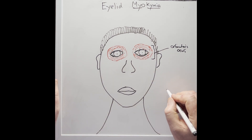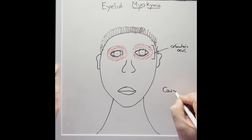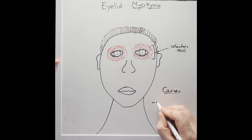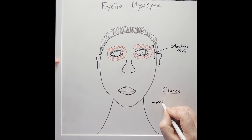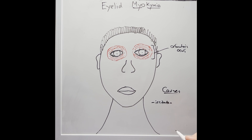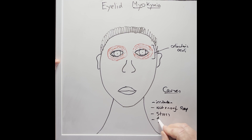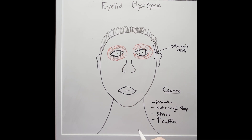So what causes these eye twitches? The simple answer is we aren't sure, but we do know it happens to healthy people. It's probably a combination of irritation, such as dry eyes caused by looking at screens for too long, not enough sleep, stress, anxiety, or too much caffeine. It's probably a sign your body is telling you to slow down.